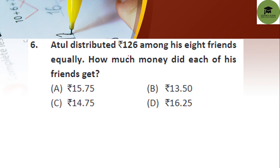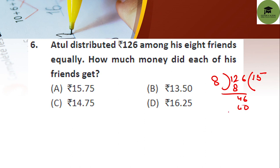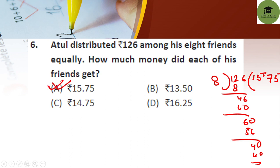Question 6: Atul distributed ₹126 among his 8 friends equally. How much money did each friend get? Simply divide 126 by 8: 8 × 15 = 120, remainder 6 — giving ₹15.75 each. So option A is your correct answer.